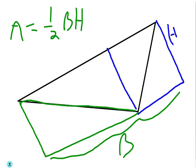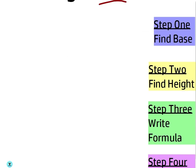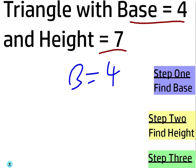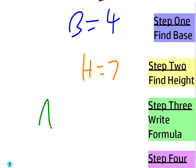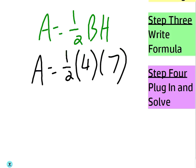Let's apply that formula to a few problems. Here's one in words: find the area of a triangle with base 4 and height 7. Step 1: the base is 4. Step 2: the height is 7. Write out the formula — that's the same no matter what — and then just plug it in and solve. One-half times 4 times 7, which is 2 times 7, which equals 14.